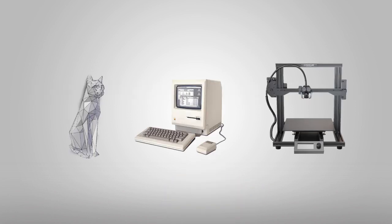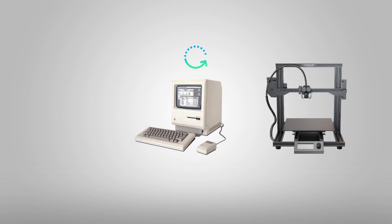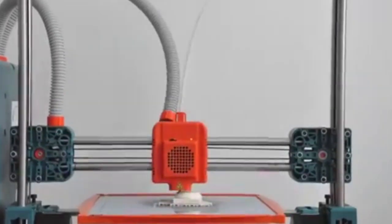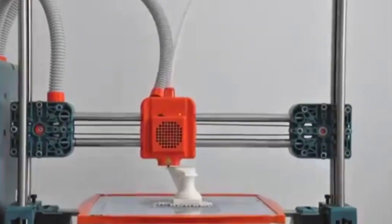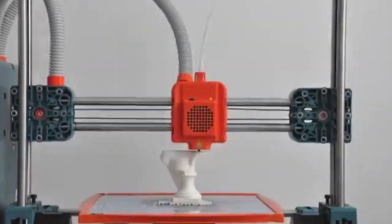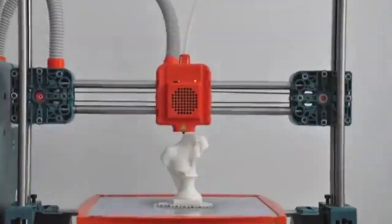The computer will take a 3D model and change it into instructions that your machine and extruder can understand. Then the machine runs the extruder in a certain path to build your object. Generally this is done by building it up layer by layer.